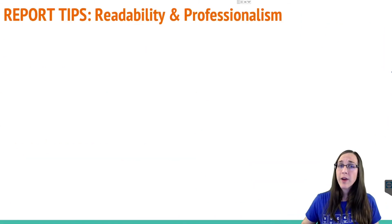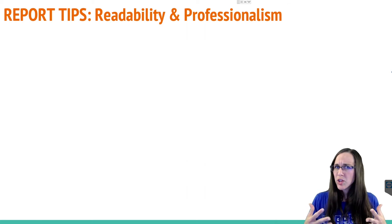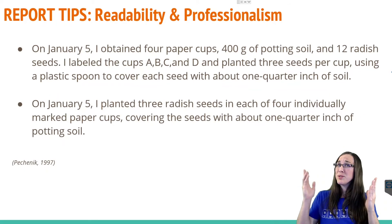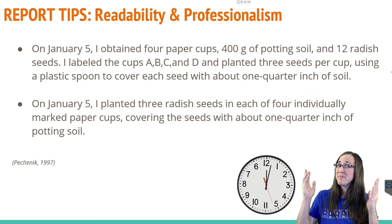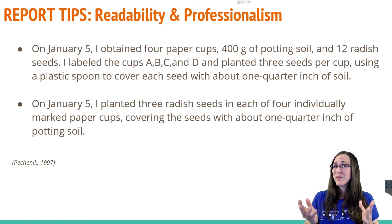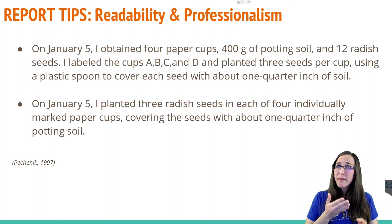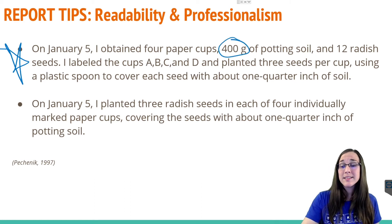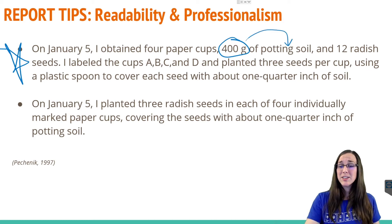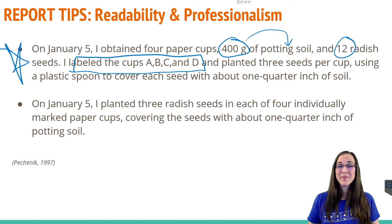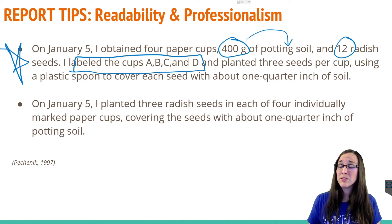Here are a few tips and tricks for writing your lab report. When writing your procedures section, you want to be excruciatingly, painfully detailed. Compare two sample paragraphs — number one has far more detail, including specific masses of materials used and how many radish seeds were used. You wouldn't have to guess how to label anything. You'd know exactly how to recreate the same experiment. So when writing out your procedures, be excruciatingly detailed.